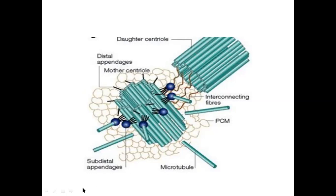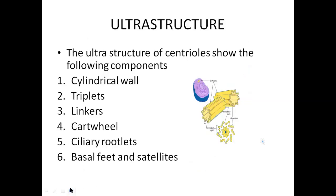When we consider the ultrastructure of the centrosome, it mainly consists of six components: number one the cylindrical wall triplets, linkers, cartwheel, ciliary rootlets, basal feet, and the satellites.